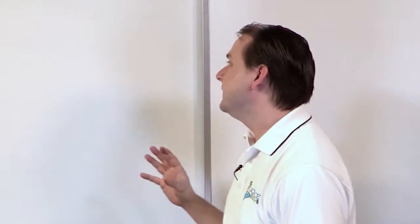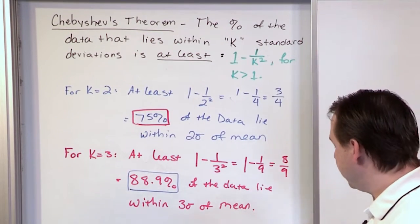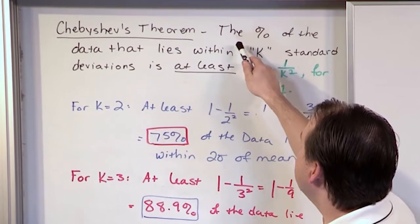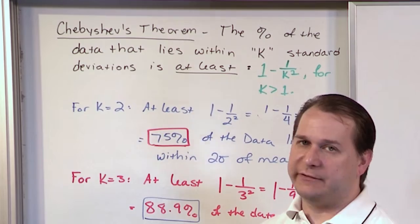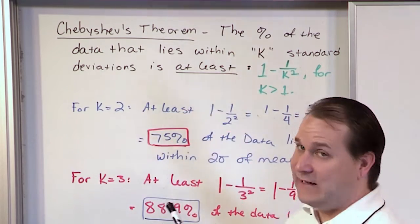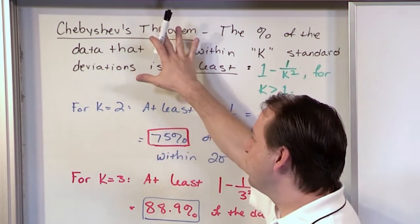There are a lot of words to Chebyshev's theorem. I've already written them on the board, so I'm going to slide this back and you're going to see a wall of text — just trust me when I tell you it's not hard. So just read it with me and I will explain it. Chebyshev's theorem says that the percentage of the data that lies within k standard deviations is at least 1 minus 1 over k squared, for k greater than 1. That is the actual theorem.